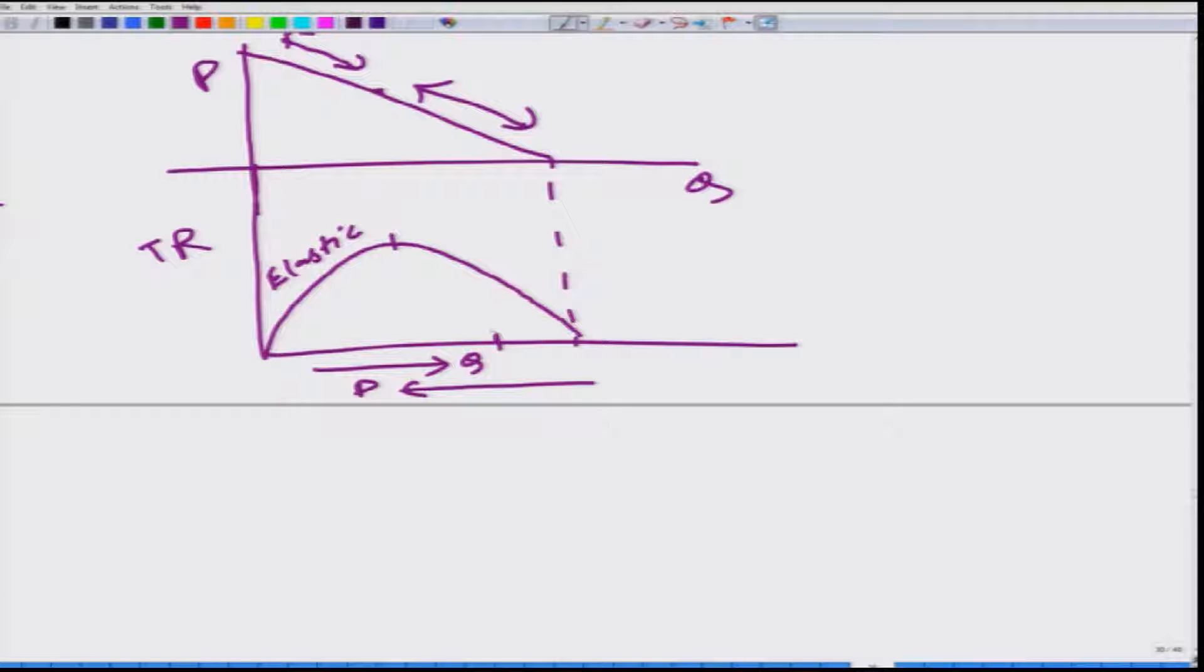So if we take a level of output which is in the inelastic zone, what happens when you decrease the level of output? q goes down, but p would of course go up, because p and q are inversely related to each other. The total revenue goes up.